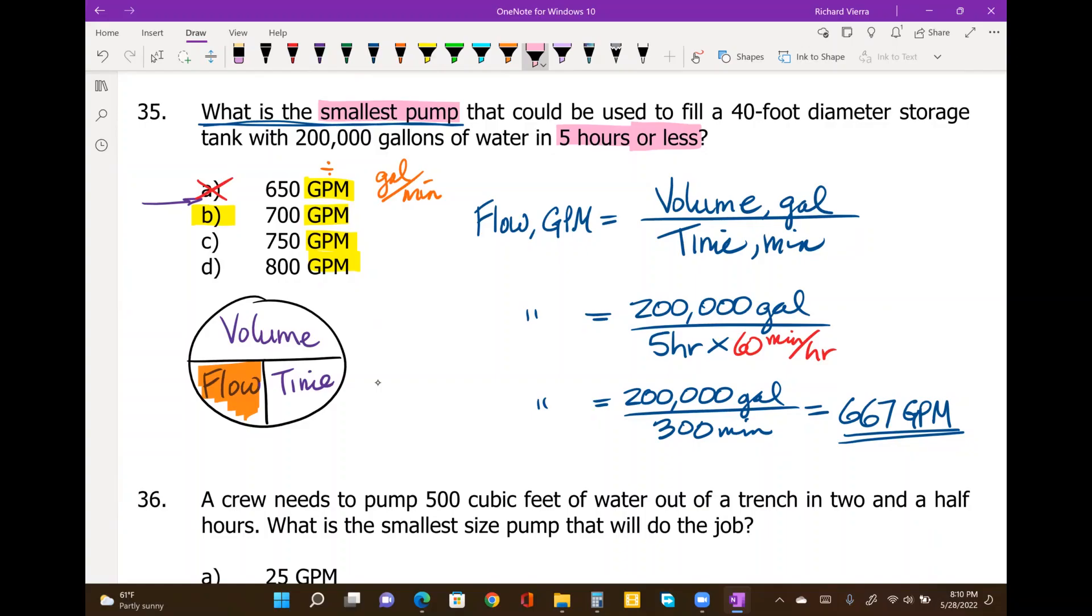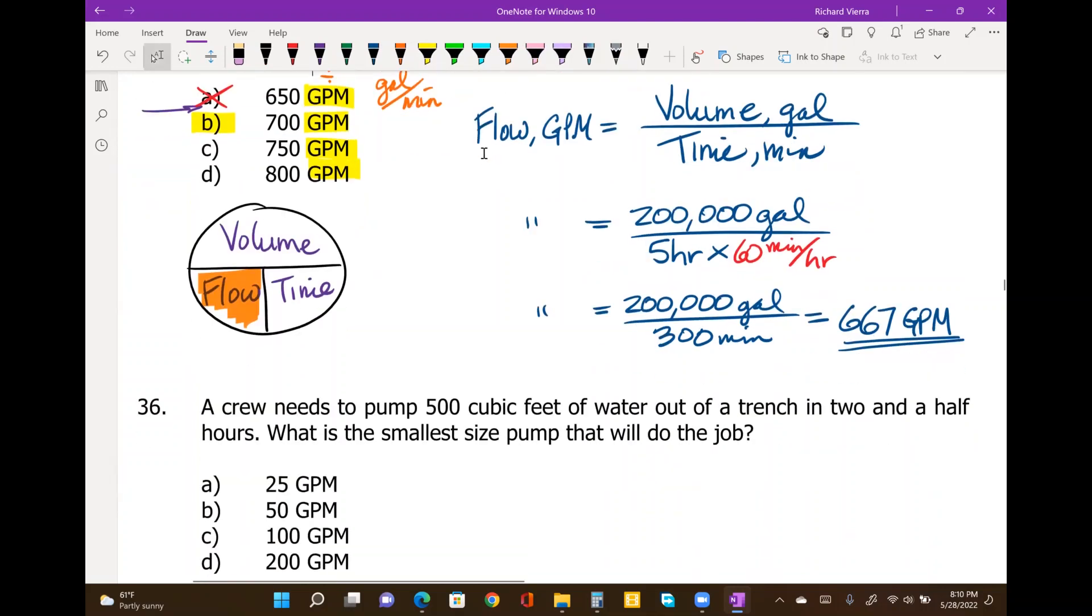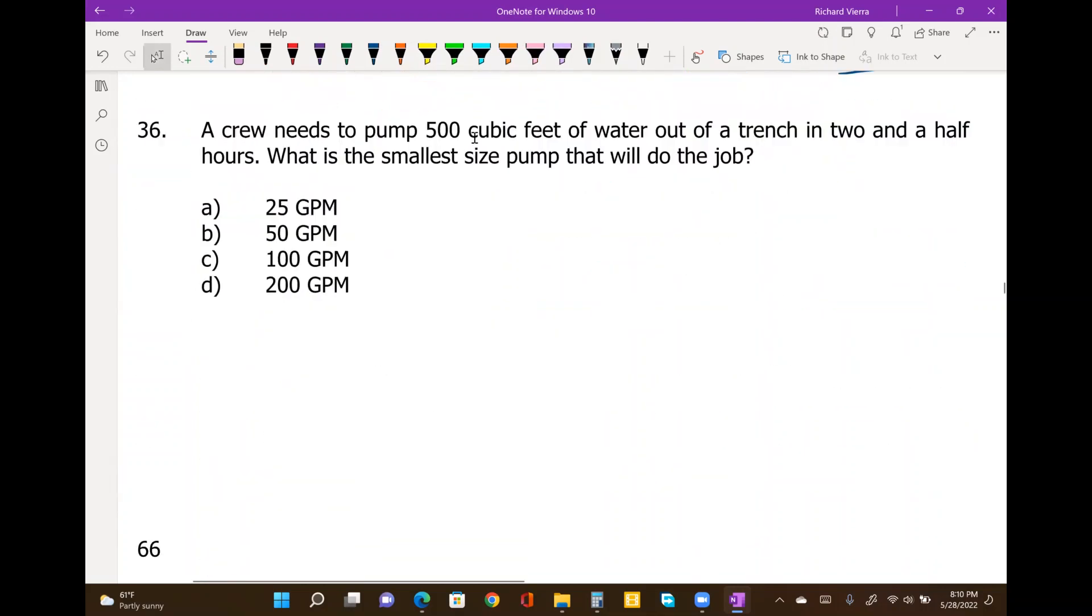Going on to number 36, which also has gallons per minute answers, says a crew needs to pump 500 cubic feet of water out of a trench in two and a half hours. What is the smallest size pump?